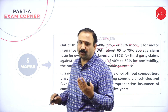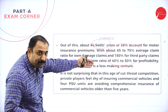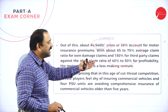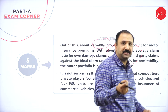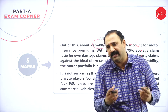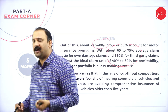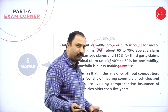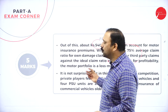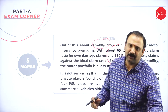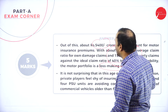The insurance premium is about 65 to 75 percent of the average claim ratio for own damage, and about 150 percent goes for third party claims against the ideal claim of 40 to 50 percent. So the motor insurance business portfolio is definitely a loss-making portfolio. Most of the time there are accidents which lead into scenarios where you are not able to satisfy the claim factors altogether, leading into a loss-making venture.